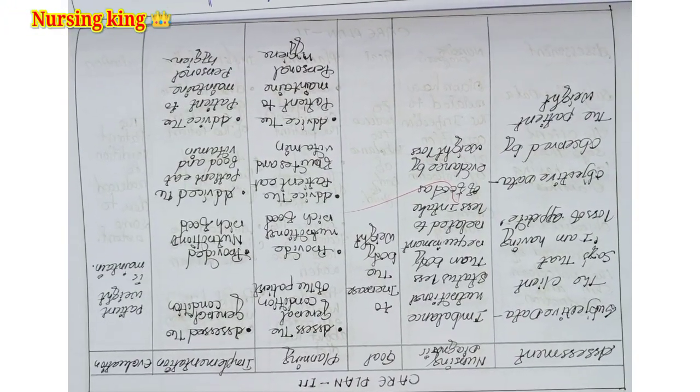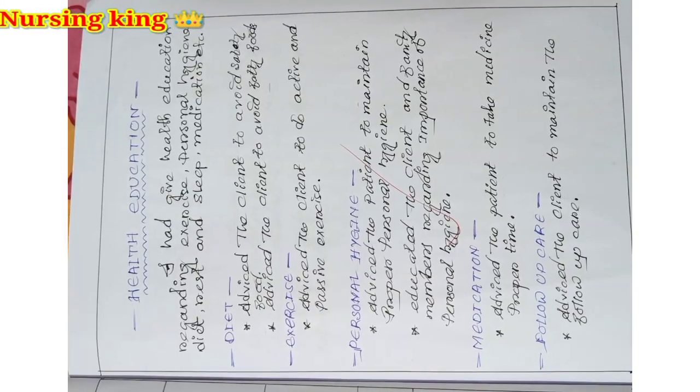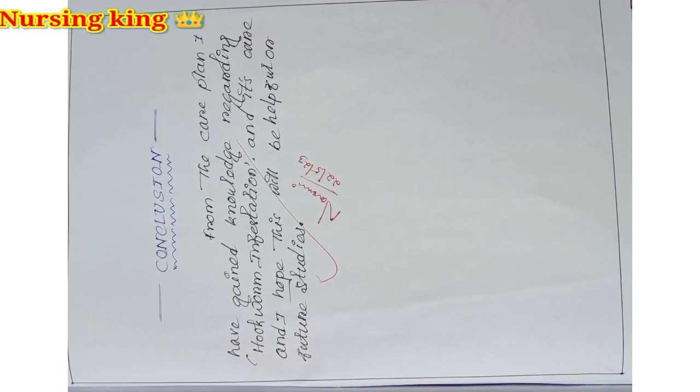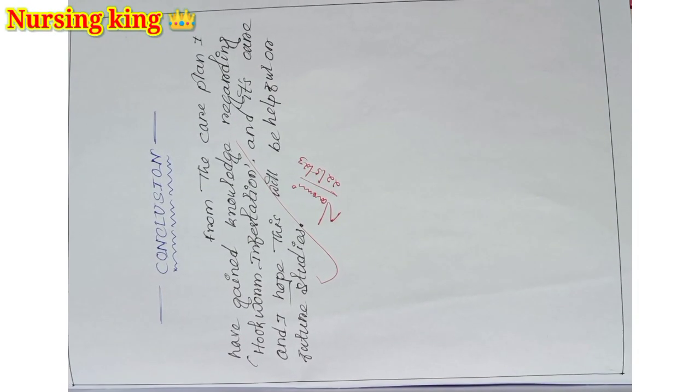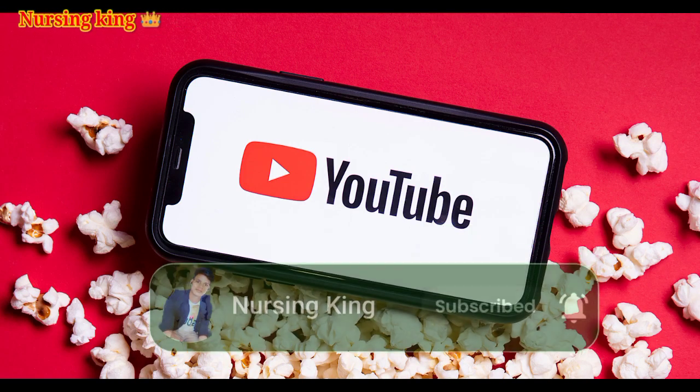There are four components that should be applied. Then you have to write the health education regarding diet and exercise. Then last is the conclusion. So I hope this video is helpful for you. Please like and subscribe my channel Nursing King. Thank you.